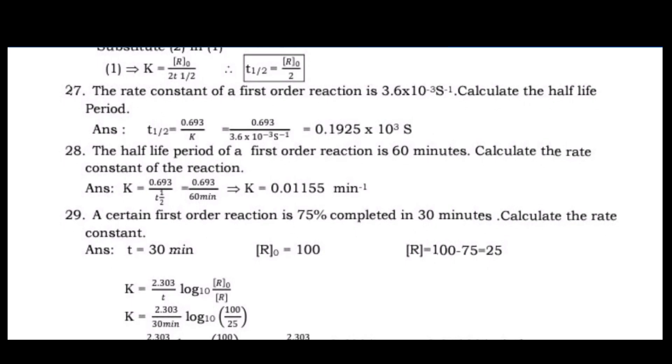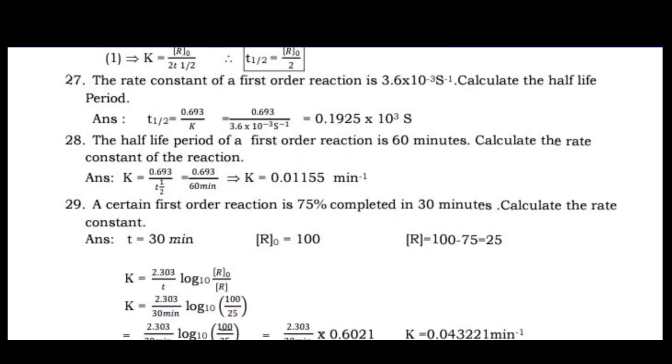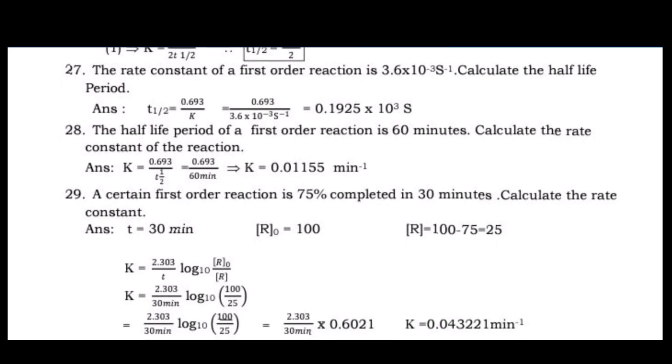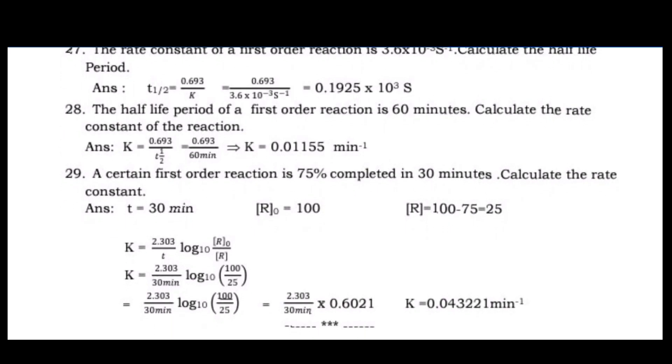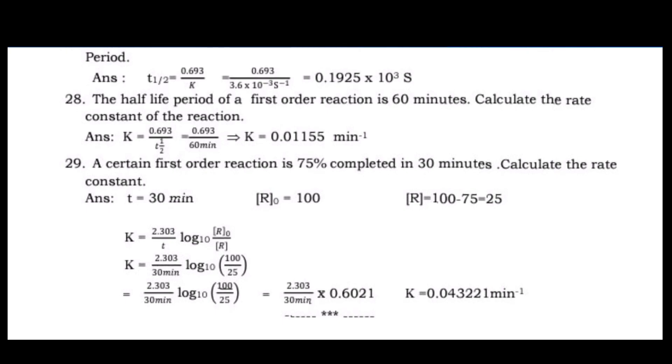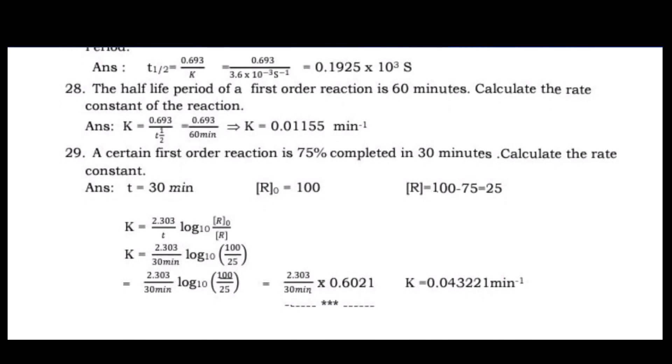Answer: [calculation follows]. Question 29: A certain first order reaction is 75% completed in 30 minutes. Calculate the rate constant.